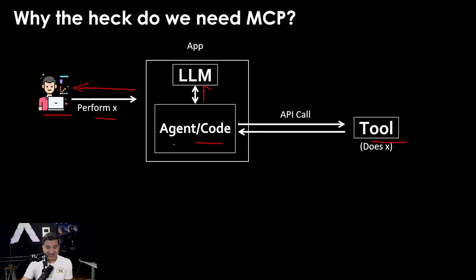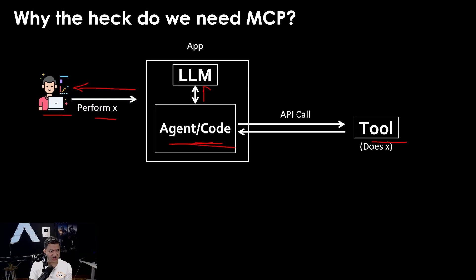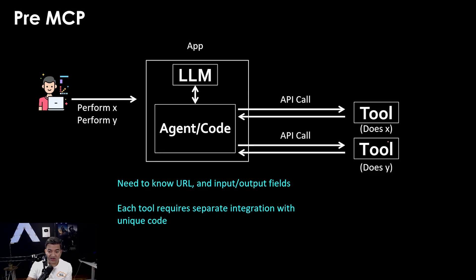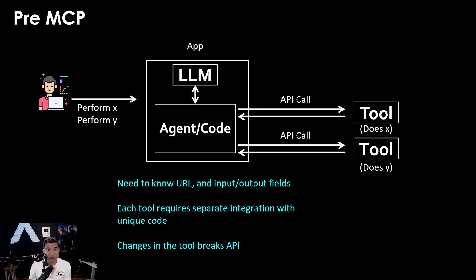So what are some ways that the agent or code can use this tool? One way is you write the tool in your favorite programming language, expose it using an API, and the code simply calls the API. It works, but the challenges are you are not going to use just one tool — you will have hundreds of tools connected to the agent. Each tool requires separate integration with unique code, and if the tool provider changes something, the API breaks because the payload or purpose of the tool changed.